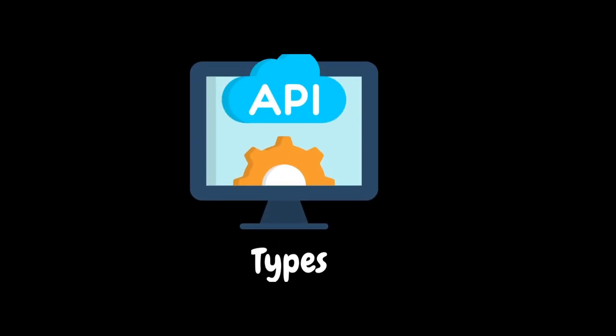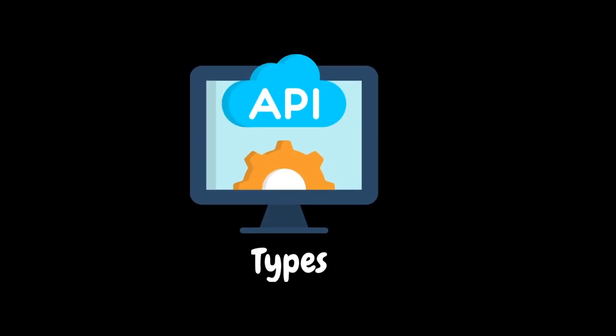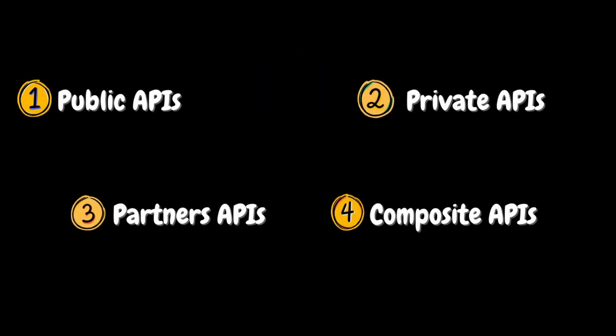Now let's look at different types of APIs. Basically, APIs can fall into four main categories: Public APIs, Private APIs, Partner APIs, and Composite APIs. Keep in mind that different companies might use other terms, so don't be confused if someone uses different terminology.